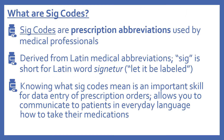So first, some information about SIG codes. SIG codes are prescription abbreviations used by medical professionals. SIG codes are actually derived from Latin medical abbreviations, which is why sometimes they don't seem to make sense to us as an abbreviation. SIG is actually short for the Latin word 'signature,' which means 'let it be labeled.' Knowing what SIG codes mean is an important skill for data entry of prescription orders, and allows you to communicate to patients in everyday language how to take their medications.